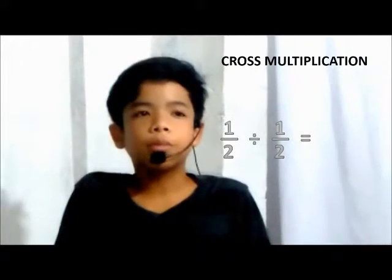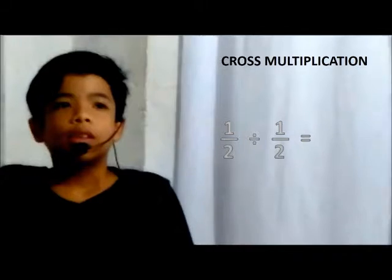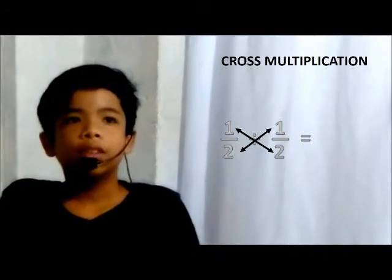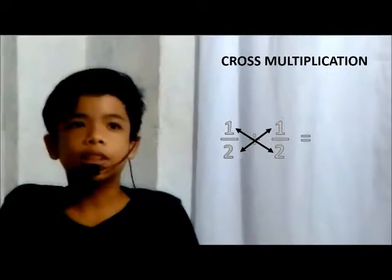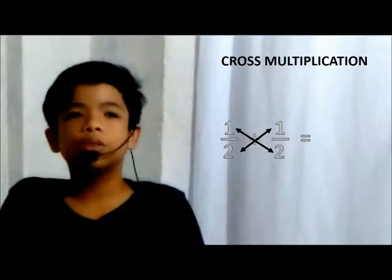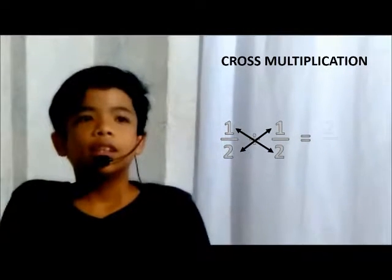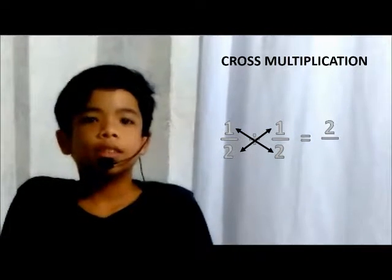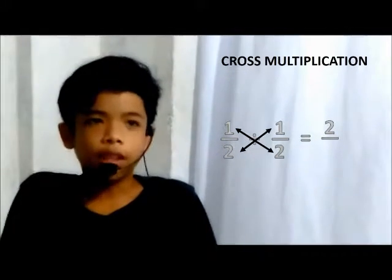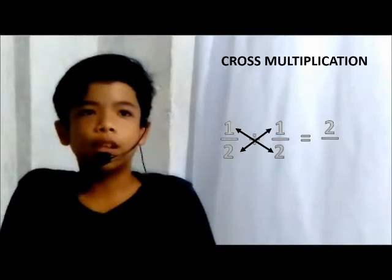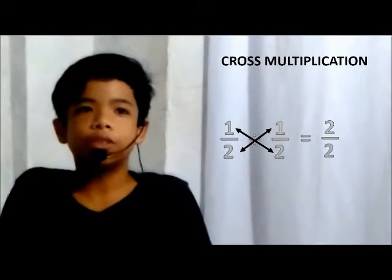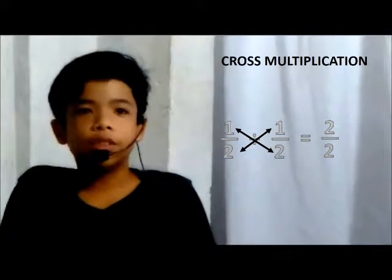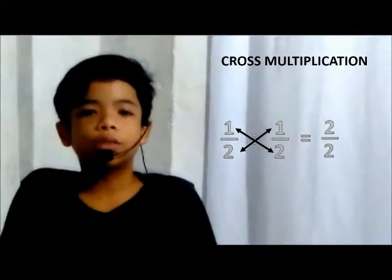Let's try this using cross multiplication. We put an imaginary line between our fractions. We multiply the numerator of the dividend, 1, to the denominator of the other fraction, which is 2 — the answer is 2, and this will be the numerator of our answer. Next, we multiply the denominator, 2, to the numerator of the other fraction, which is 1 — the answer is 2, and this will be the denominator. So our final answer is 2 over 2, which equals 1.